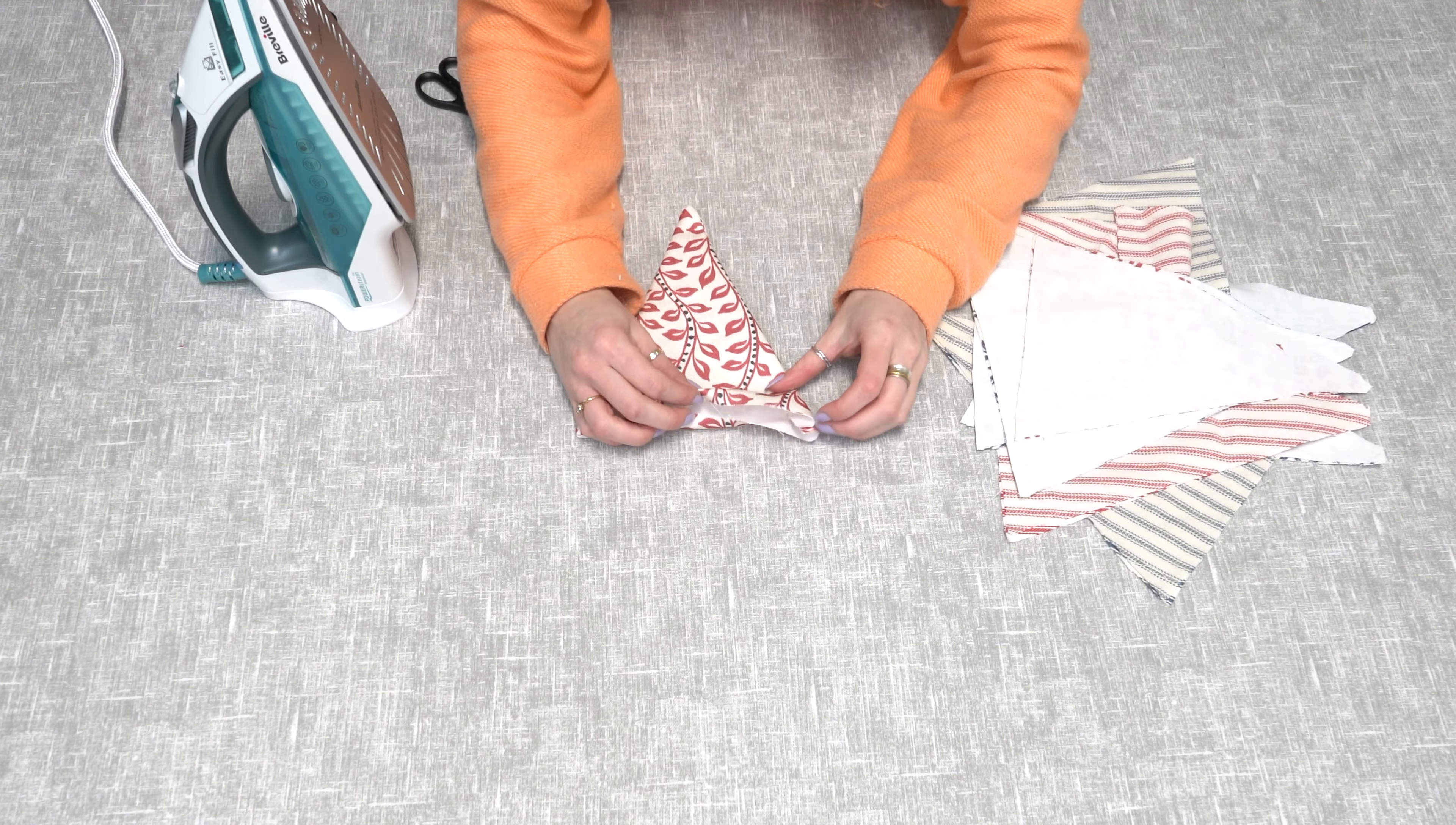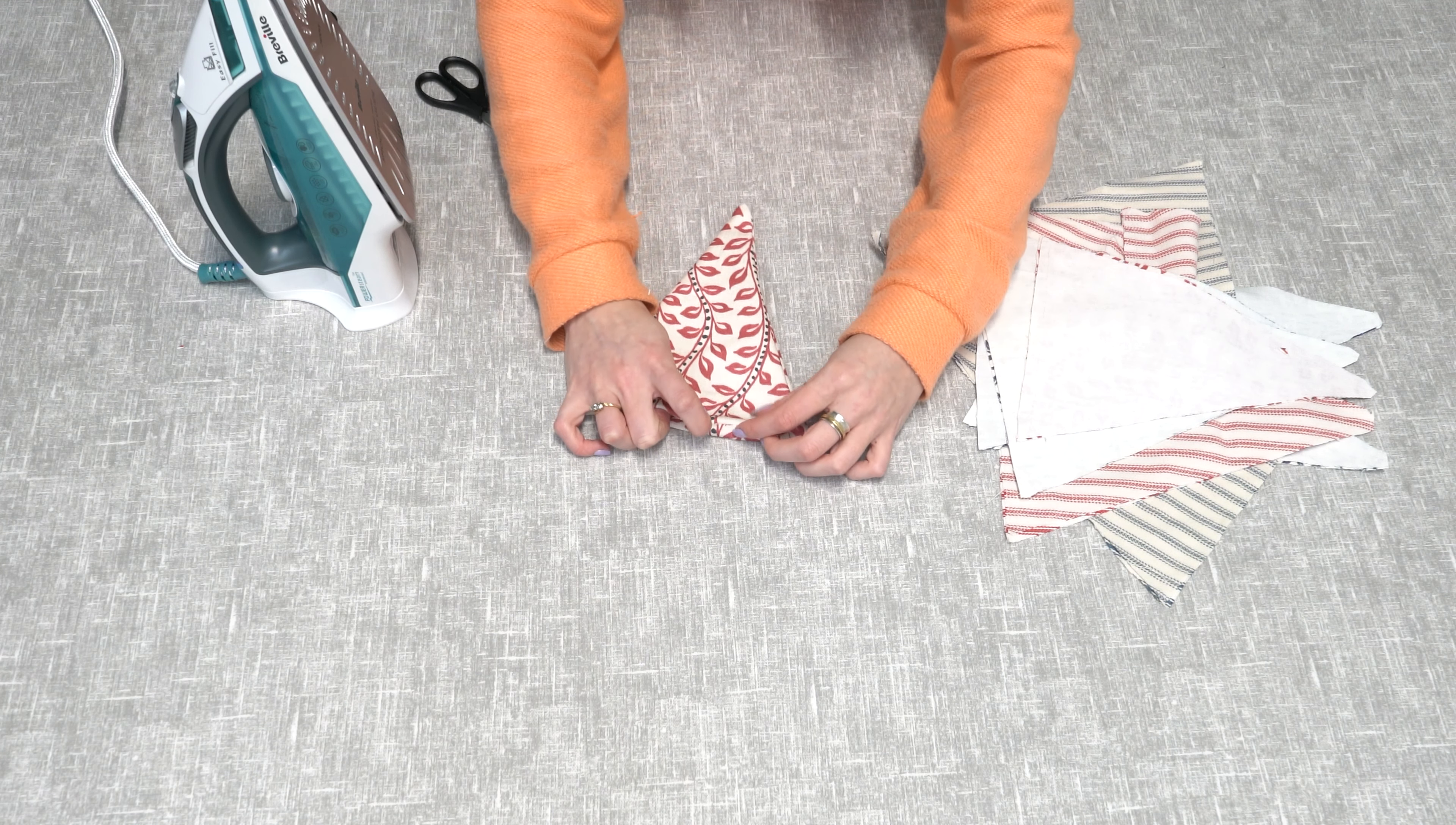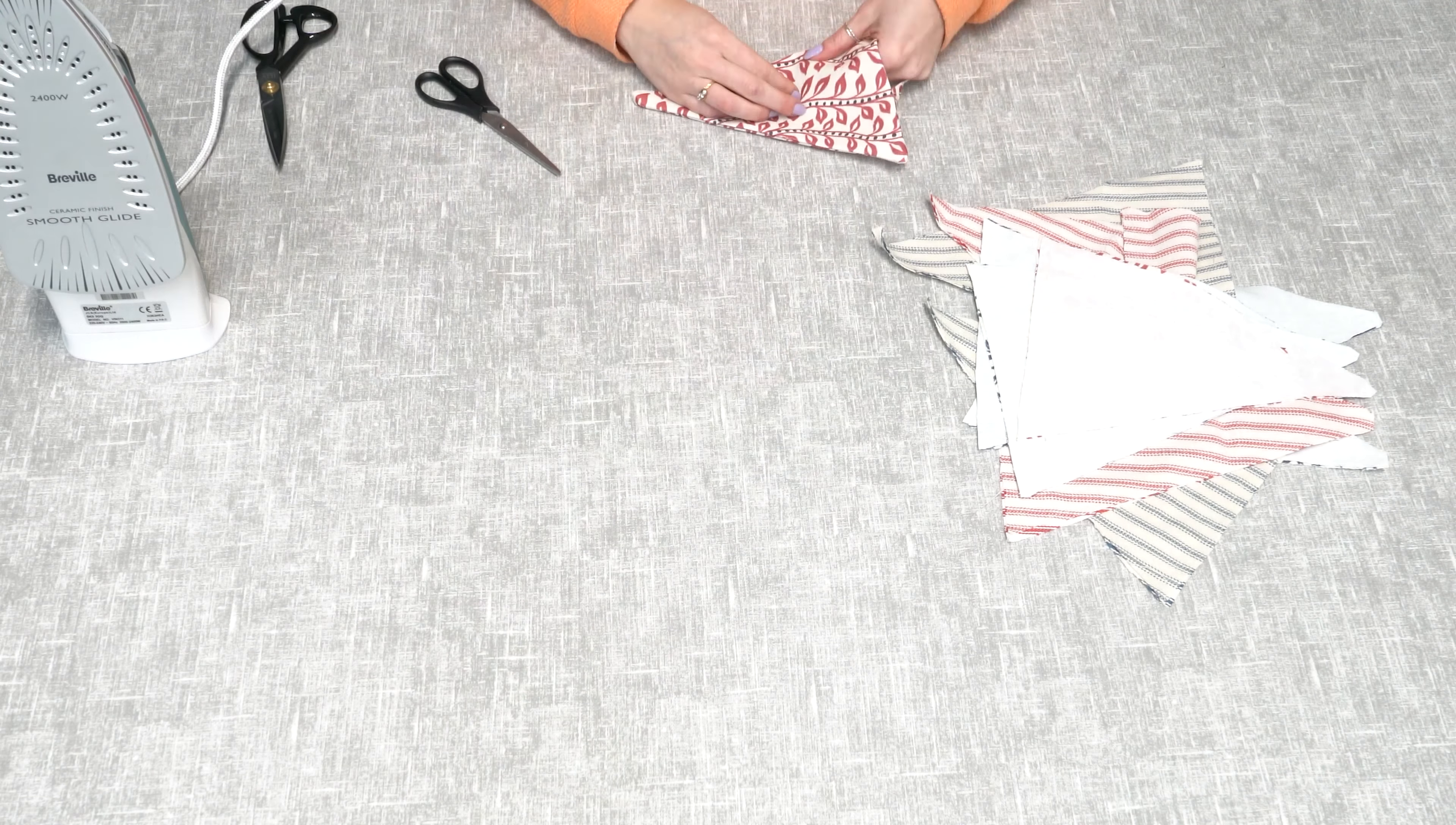So once you've turned the triangle the right way out, you want to just fold in the raw edges at the top and press them with the iron. Once you've pressed the triangle flat, you can then repeat this step with all of the others.